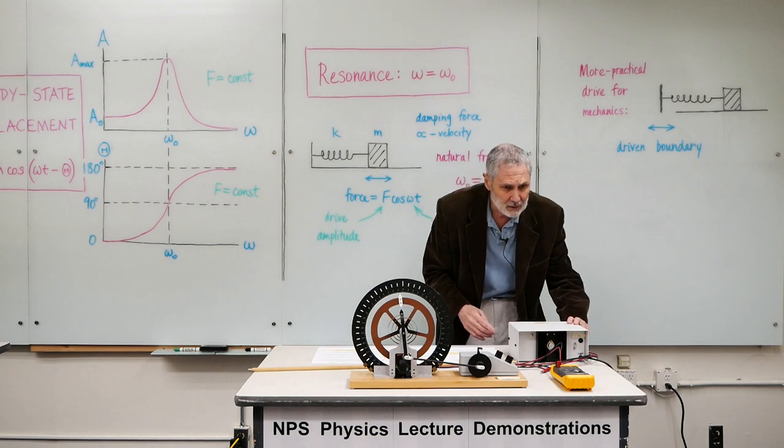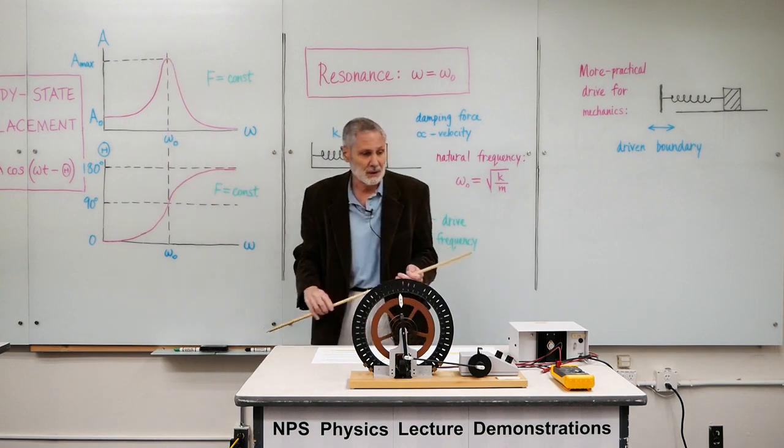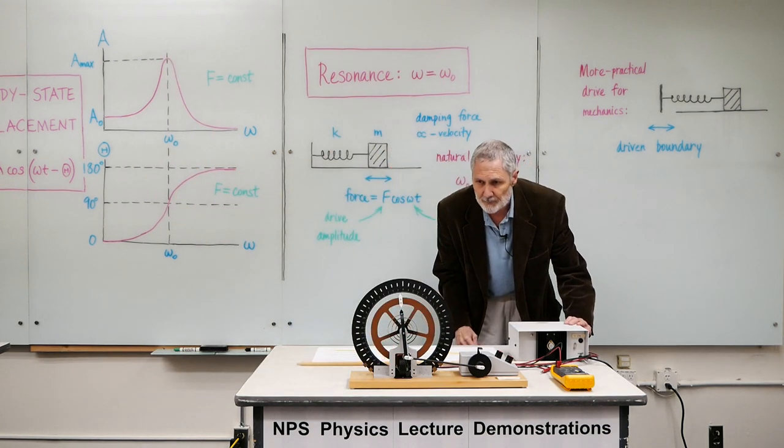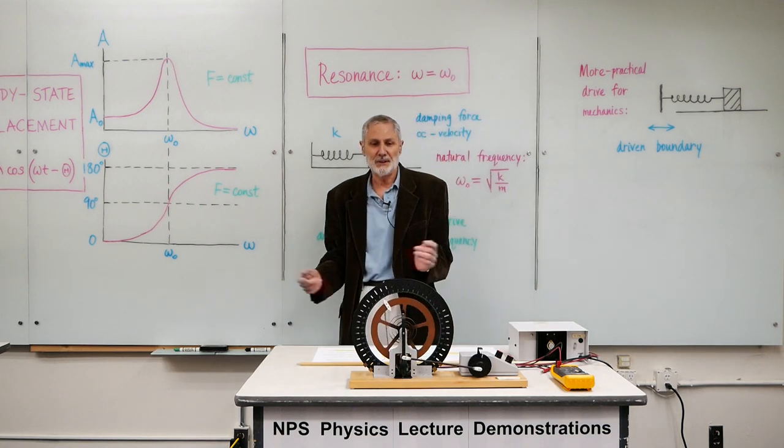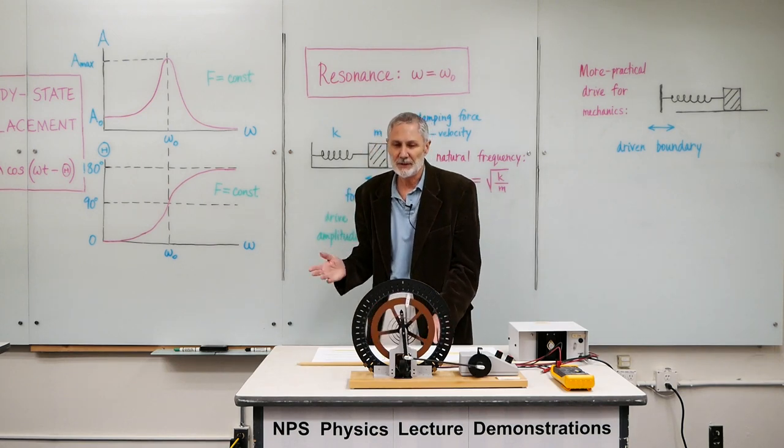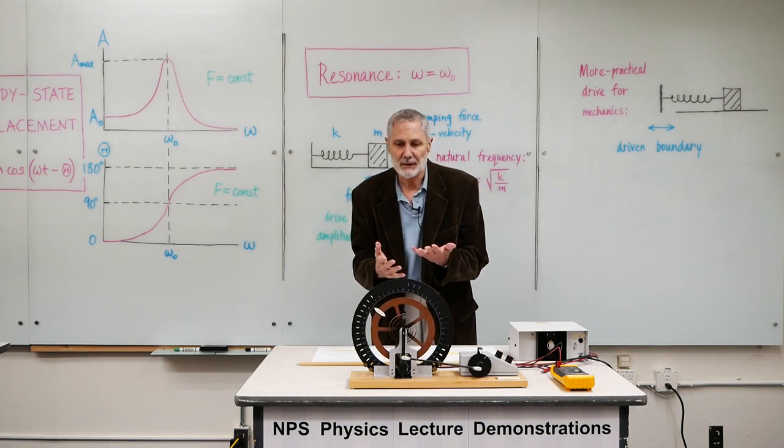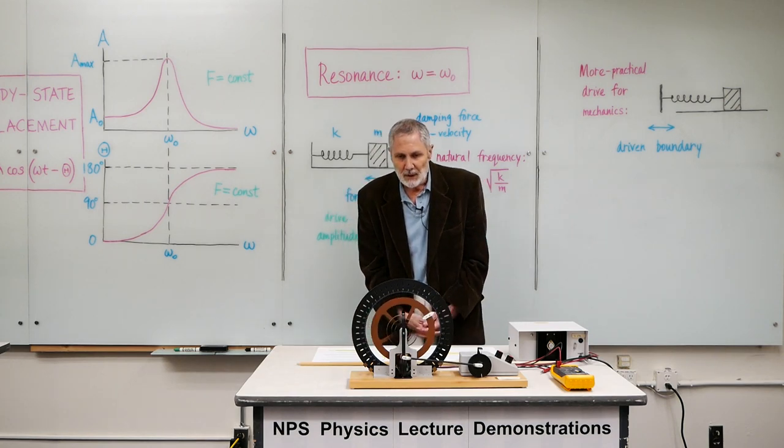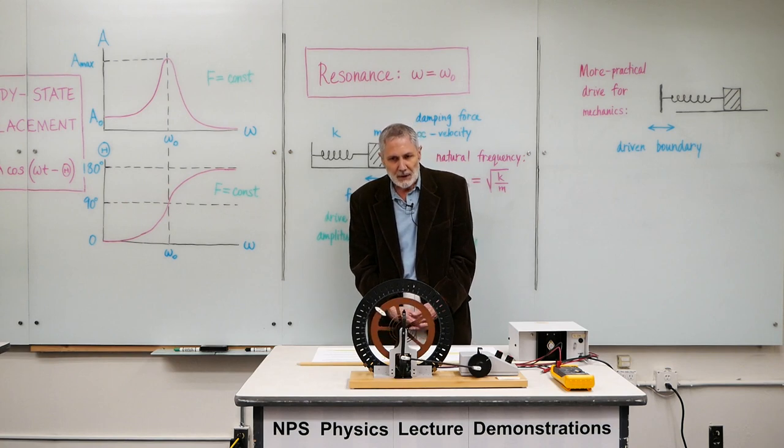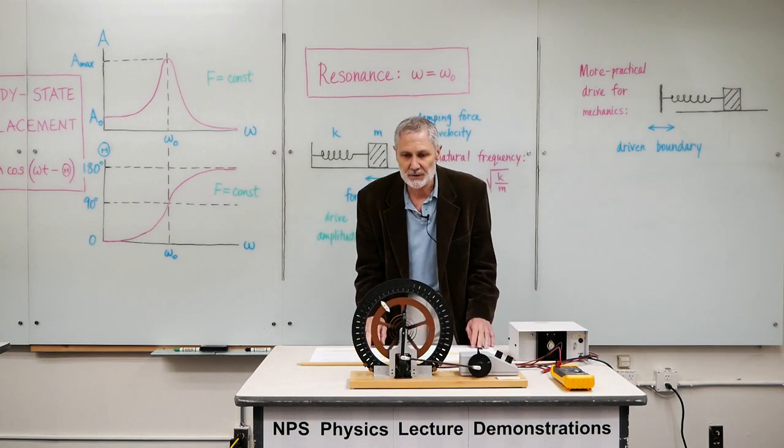So I have it set up now on resonance. We're going to be driving at very close to the natural frequency. I'm going to switch it on. Of course, the oscillator doesn't immediately go into its steady state. There's transient motion. In this case, driving at the resonant frequency, the transient motion is quite simple. The oscillations just build up in amplitude at the same frequency as the drive, which is the natural frequency here.